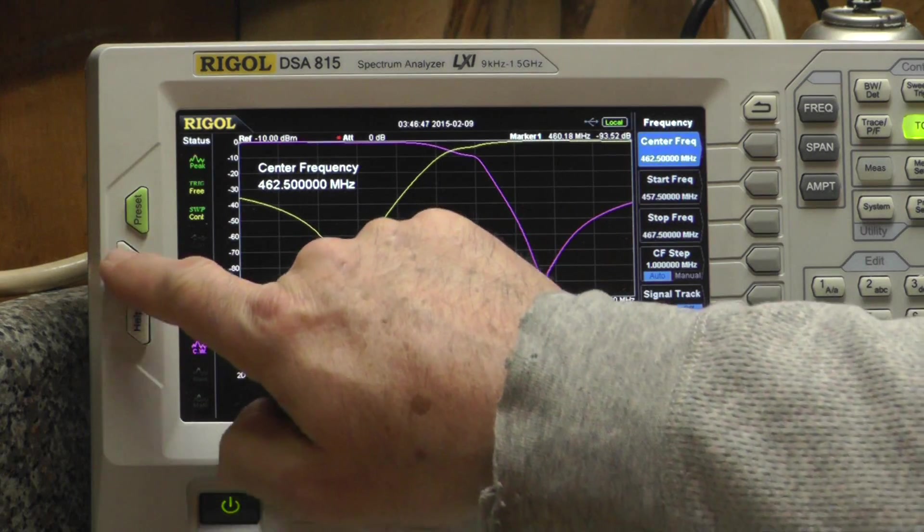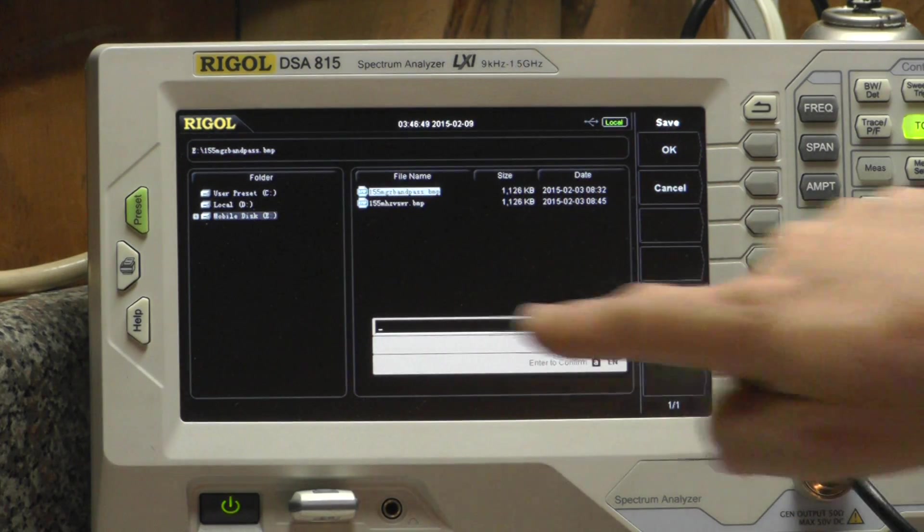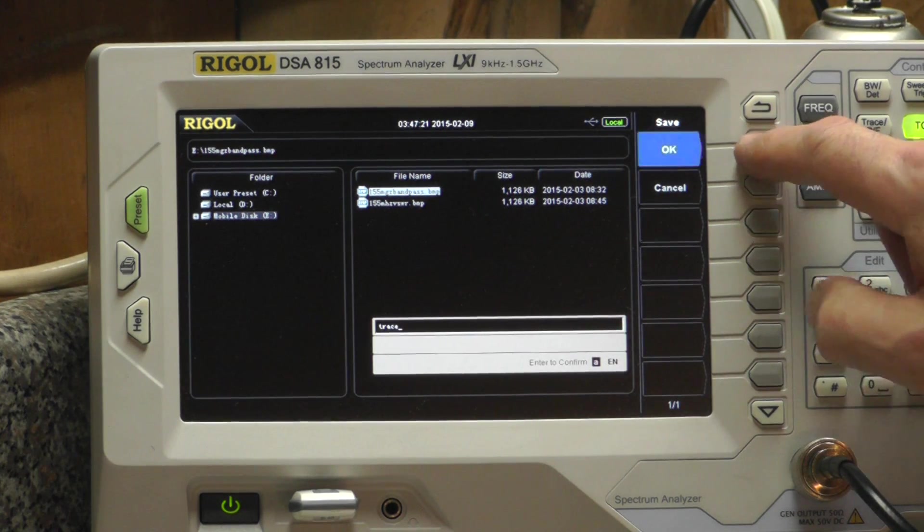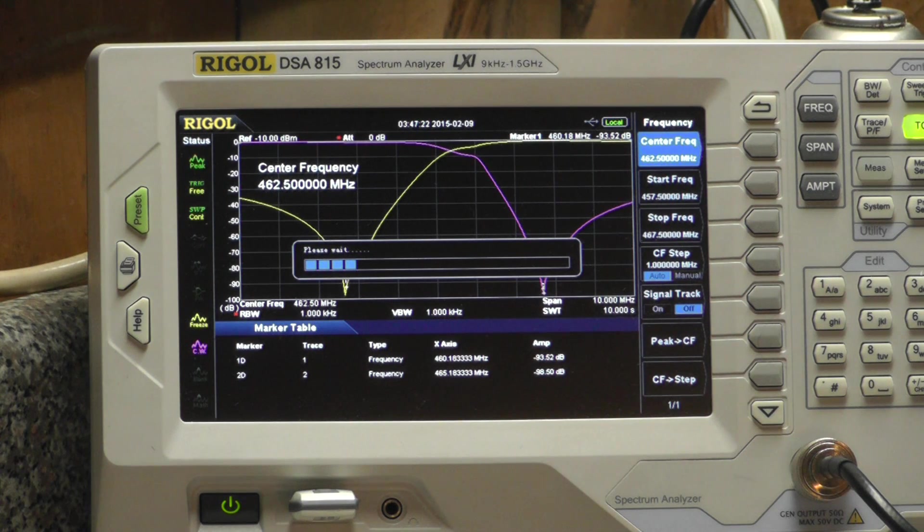We can put a USB stick in here, hit the print icon, give it a name, and click OK. We'll save that file for future reference.